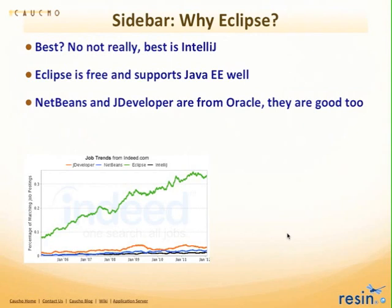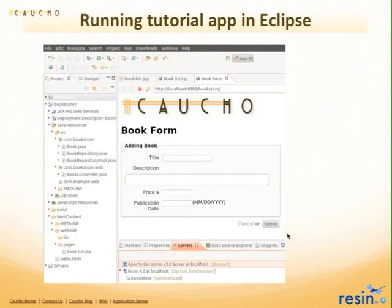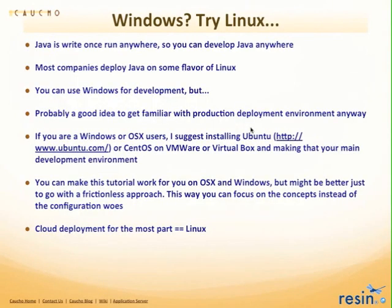Why did we pick Eclipse? It's fairly pervasive — that would be one reason. The other reason is it's free and supports Java EE well, so it serves the purposes of this tutorial. You are welcome to use whatever IDE you like. In my opinion, probably the best IDE is IntelliJ, but Eclipse is very good, it's free, it works, and there's a nice Resin plug-in which is a nice Java EE 6 server you can run right within the IDE.